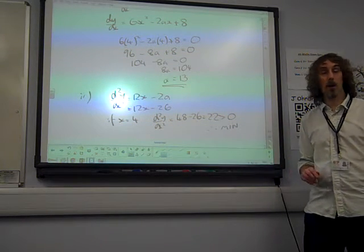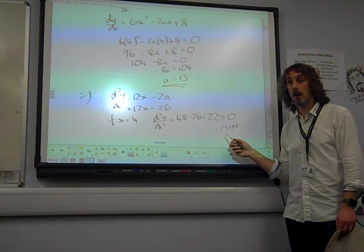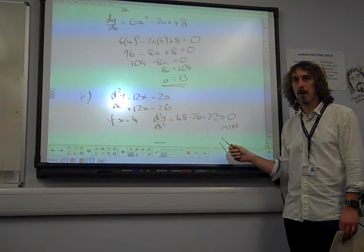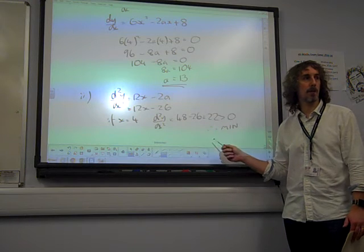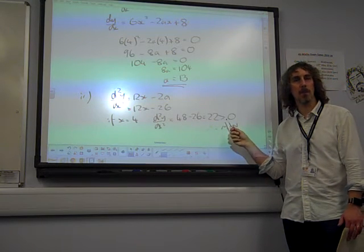Now, a few things on this: you must show that it's bigger than 0. You can't just say it's 22, so that's a minimum. You have to say why that shows you it's a minimum. So 22 is bigger than 0, therefore it's a minimum.